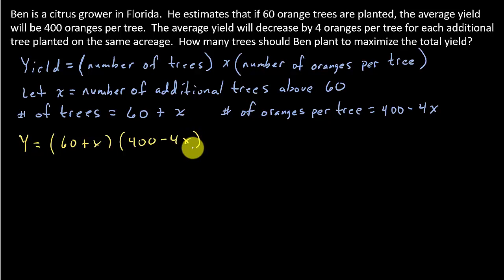And so all we need to do here is just foil this out, so we get y is equal to 24,000 plus 160x minus 4x squared.